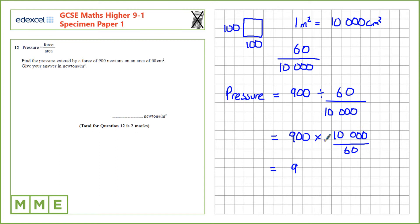So 900 times 10,000 is 9 million over 60.